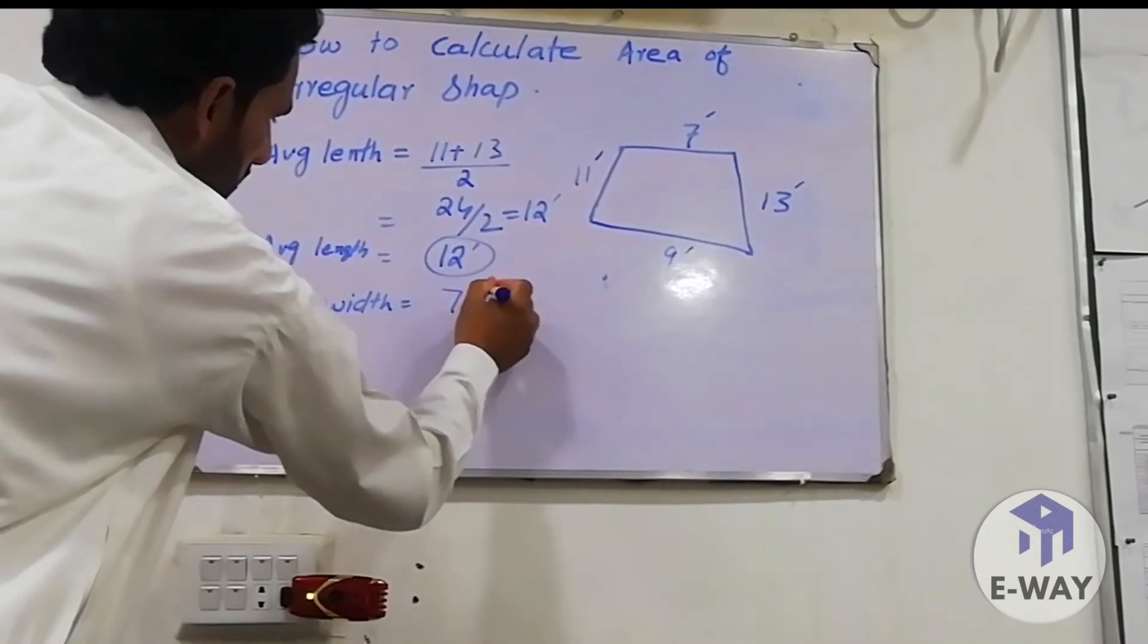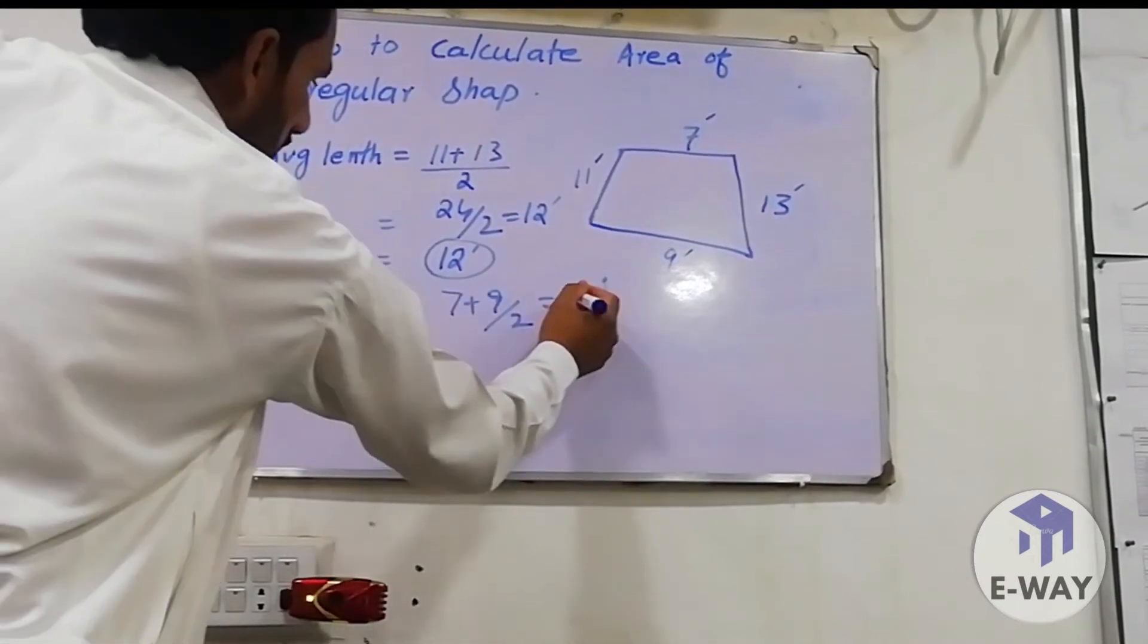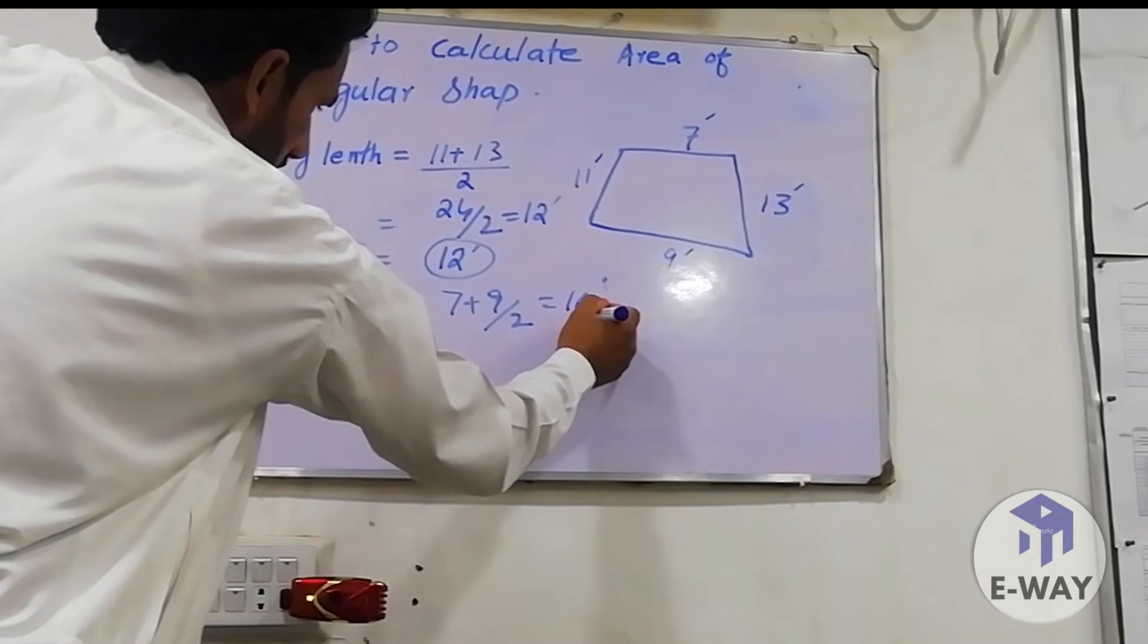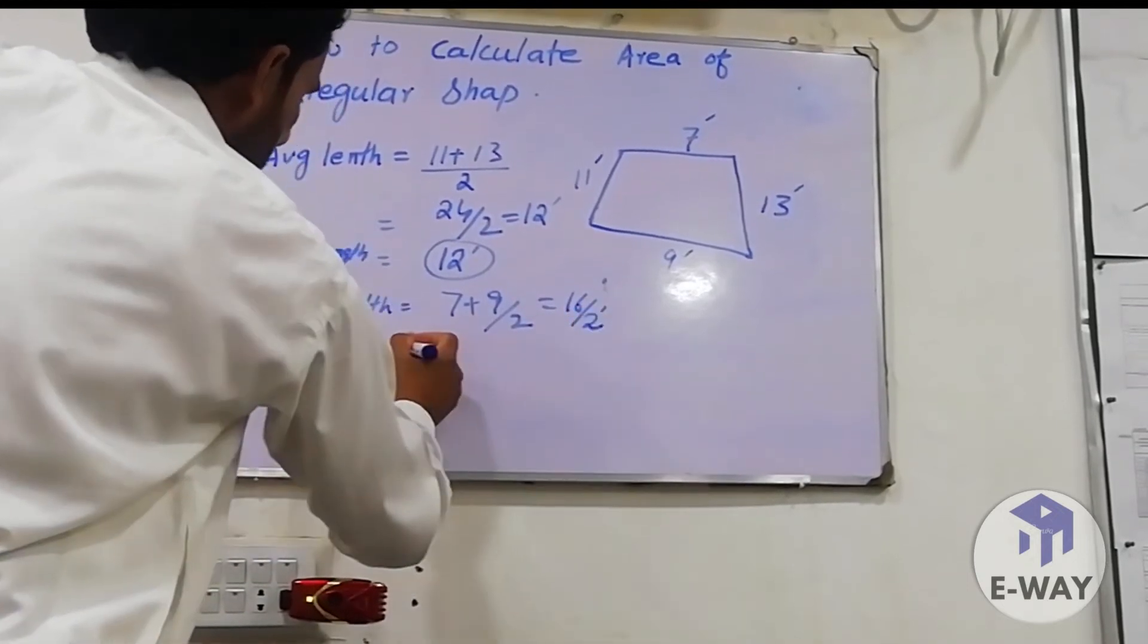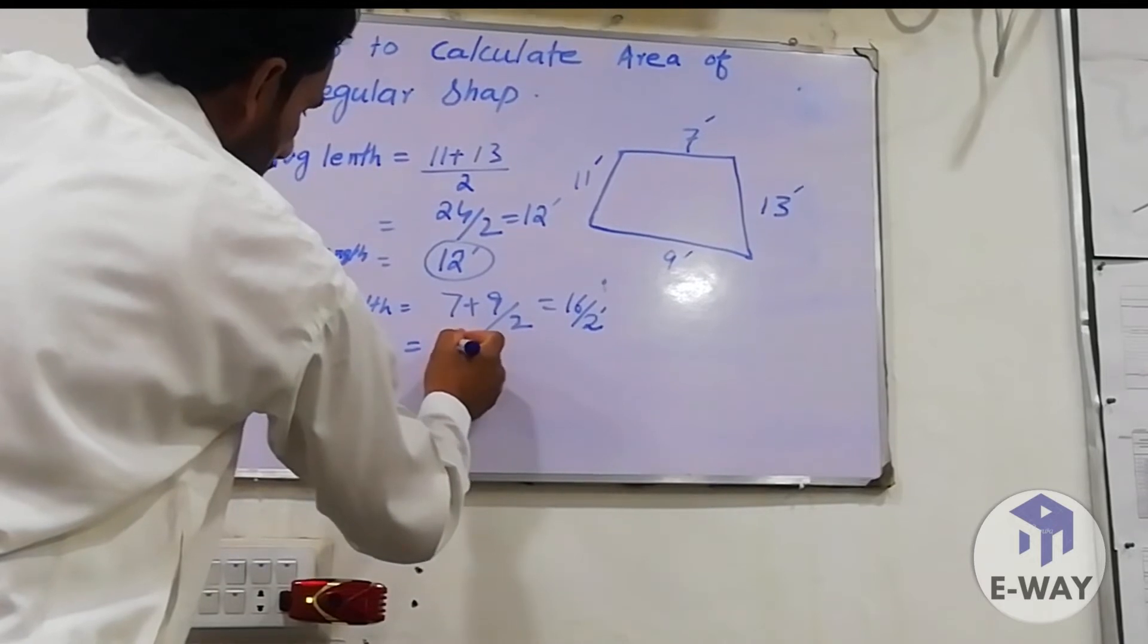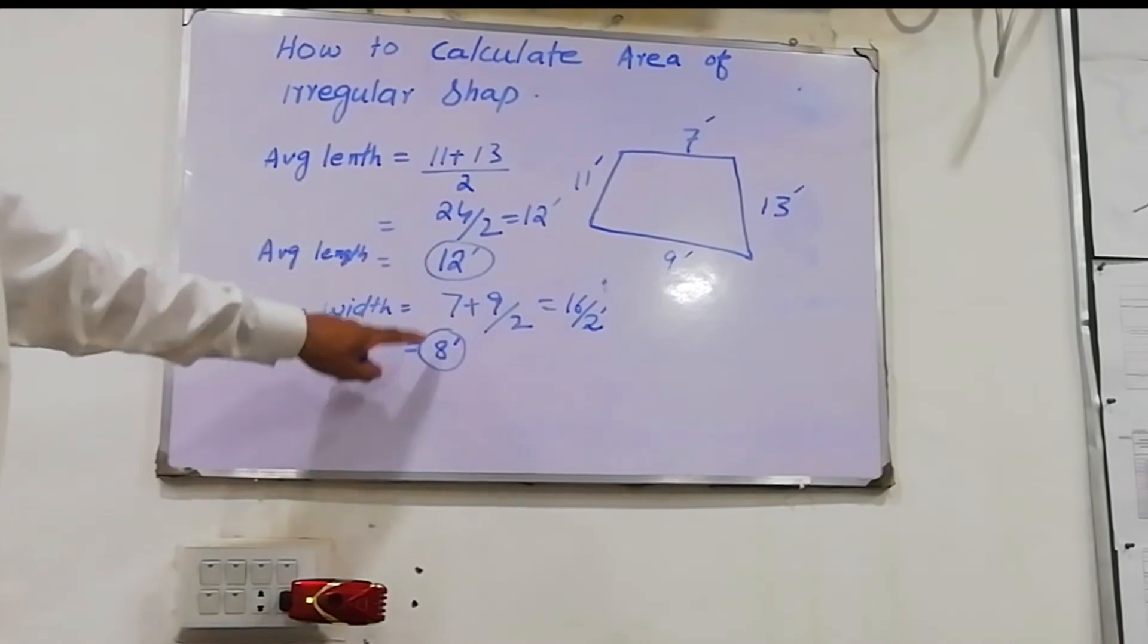Other side average width: 7 plus 9 over 2. 7 plus 9 equals 16, 16 over 2 is 8 feet.